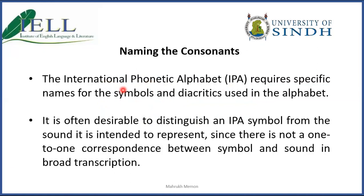IPA requires specific names for all the symbols and diacritics used in the alphabet. All the sounds are different from each other, so these sounds need some representation and a certain name to distinguish one consonant from the other. Hence it is desirable to distinguish an IPA symbol from the sound it is intended to represent. Since there is not a one-to-one correspondence between symbol and sound, each alphabet and each sound does not always correspond. That is why it is important to name each consonant based on its distinguishing features.